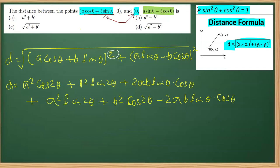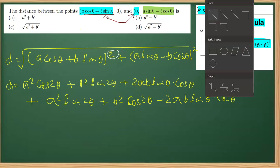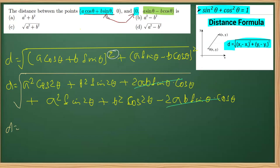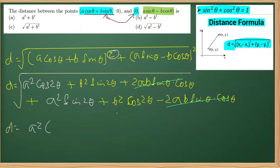We must not forget that there is a whole under root over all of this. Now, the cross terms 2ab sinθ cosθ and −2ab sinθ cosθ cancel each other out. Next, taking a² common from the remaining terms: a² cos²θ + a² sin²θ gives a²(sin²θ + cos²θ).